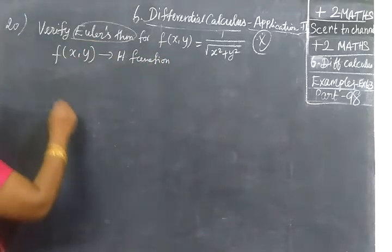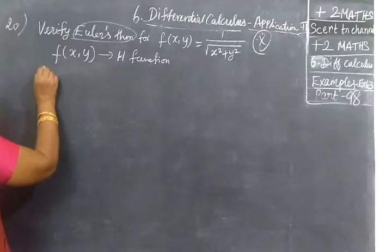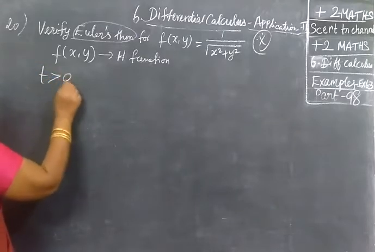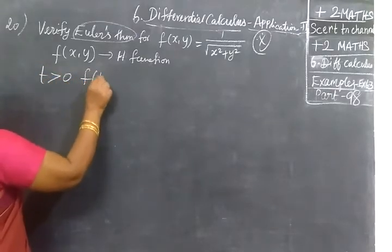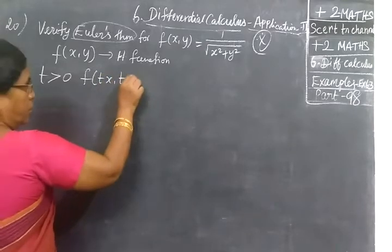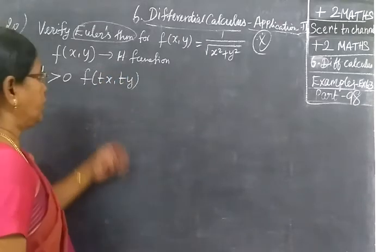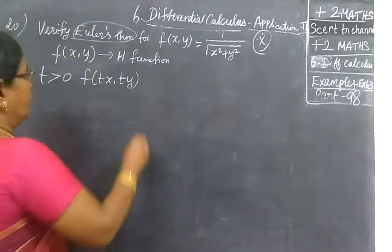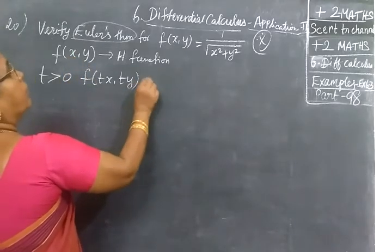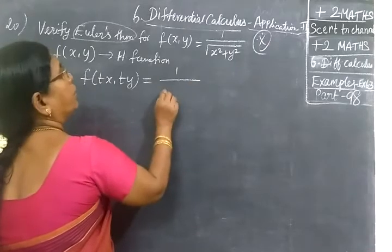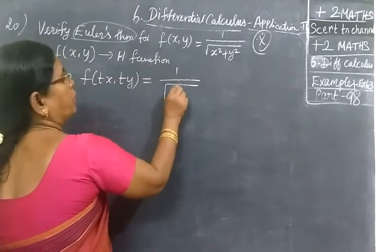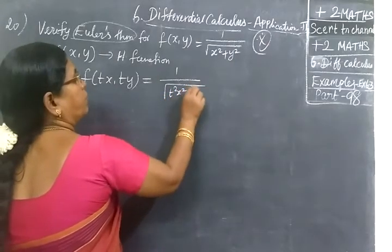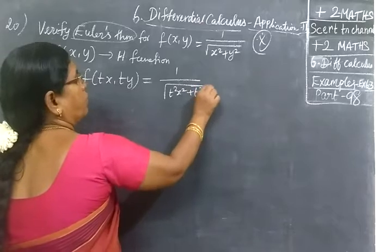We will prove homogeneous function. For t greater than 0, you can write f(tx, ty). t greater than 0 value multiply. So we are writing 1/√(t²x² + t²y²).